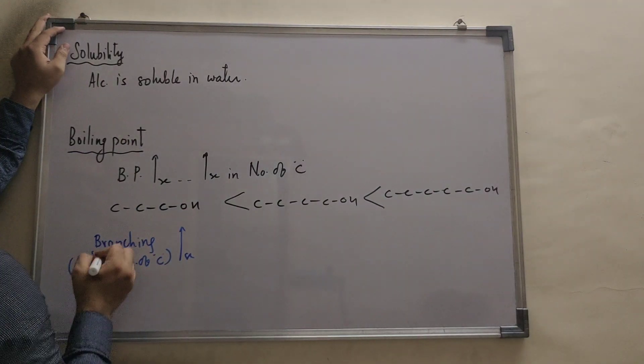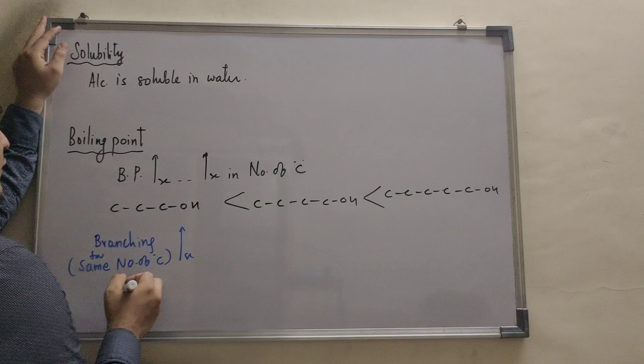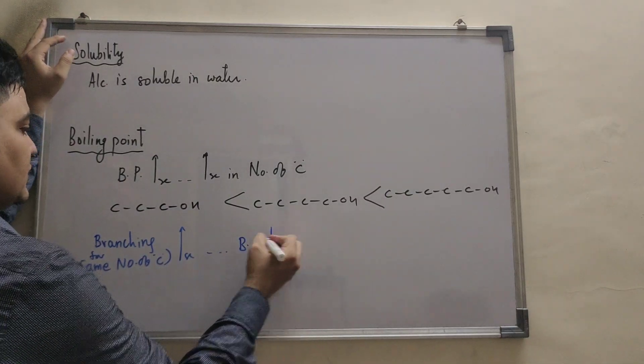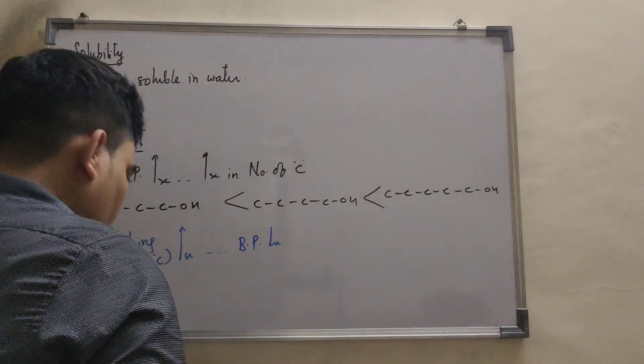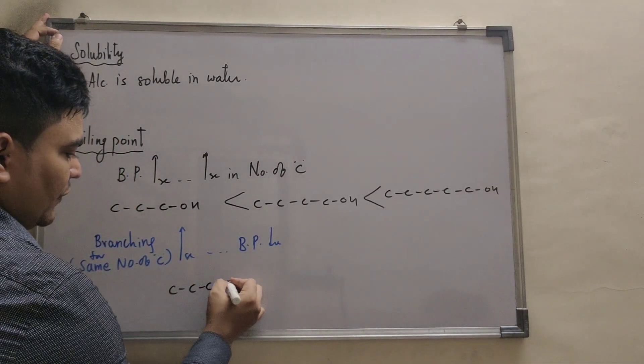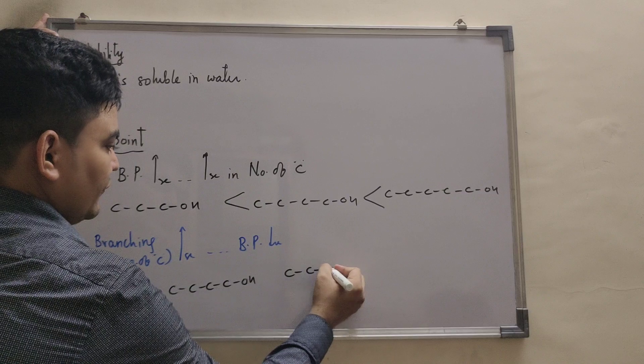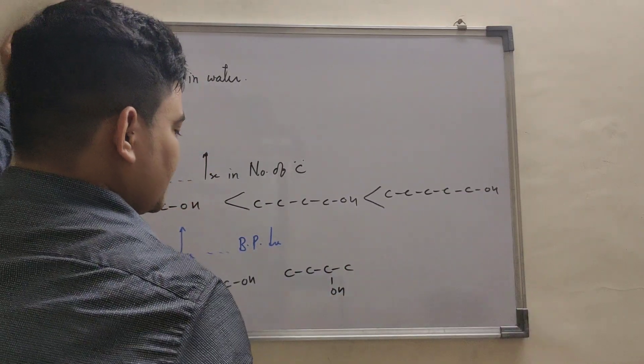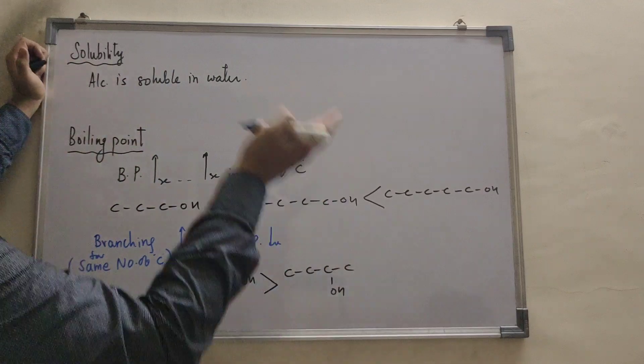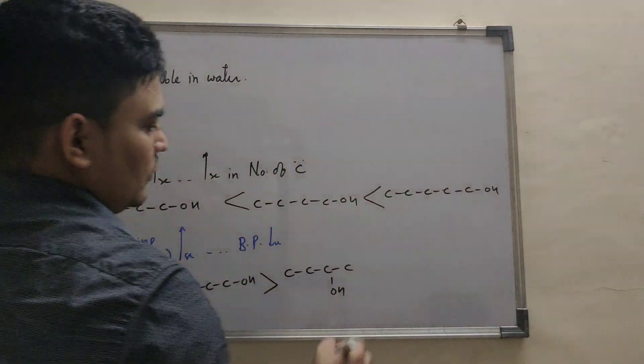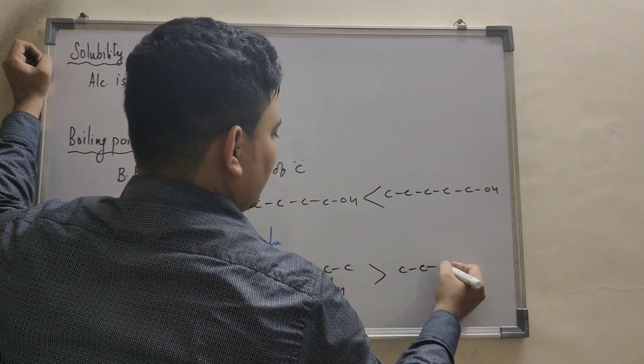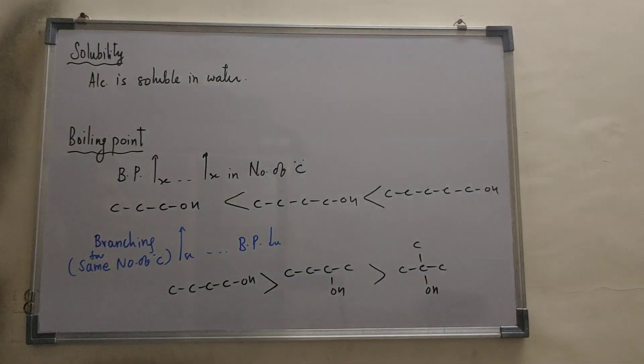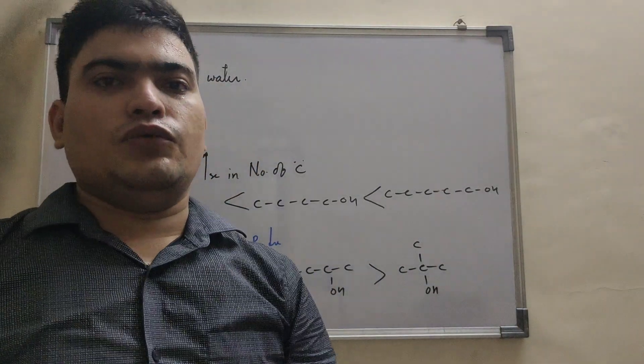Barabar, branching specify for same number of carbon if branching increases then boiling point decreases. Even if butane 1-ol and butane 2-ol compared experimentally it has been observed that butane 1-ol has more boiling point than butane 2-ol. So 2-methyl 2-propanol aise aayega. Remember Van der Waals forces reason, only surface area is ka reason hoga.